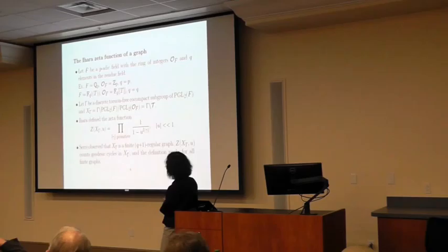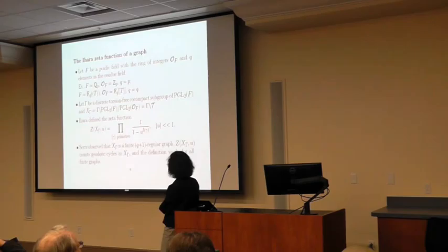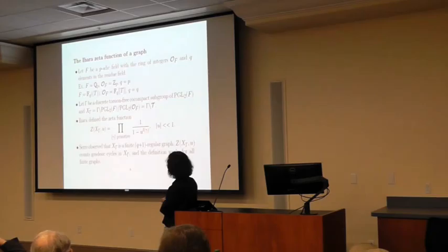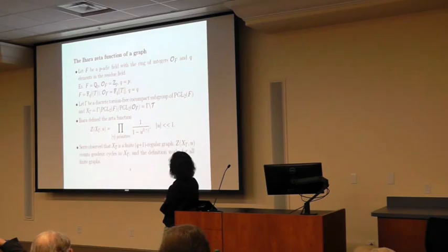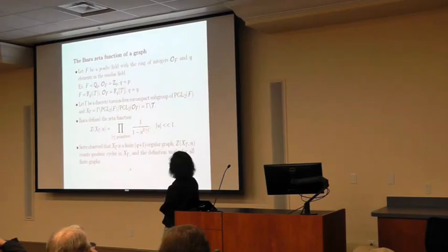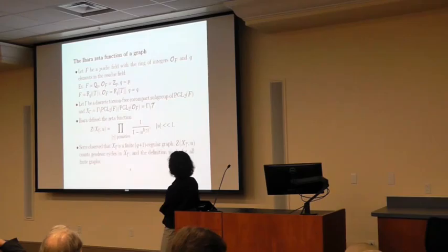Therefore, we have this setting: take PGL₂(F) modulo its maximal compact subgroup. On the other side, take a discrete torsion-free co-compact subgroup of PGL₂(F). So we get something which is finite. Ihara then defined the zeta function for this finite quotient Γ. It has a form similar to the way Selberg defined his zeta function — it is a product over the conjugacy classes of primitive elements in gamma — but each factor has a different form for the p-adic case. Each factor is 1 over (1 minus u to the length of gamma). Ihara proved that this zeta function is a rational function with many nice properties.